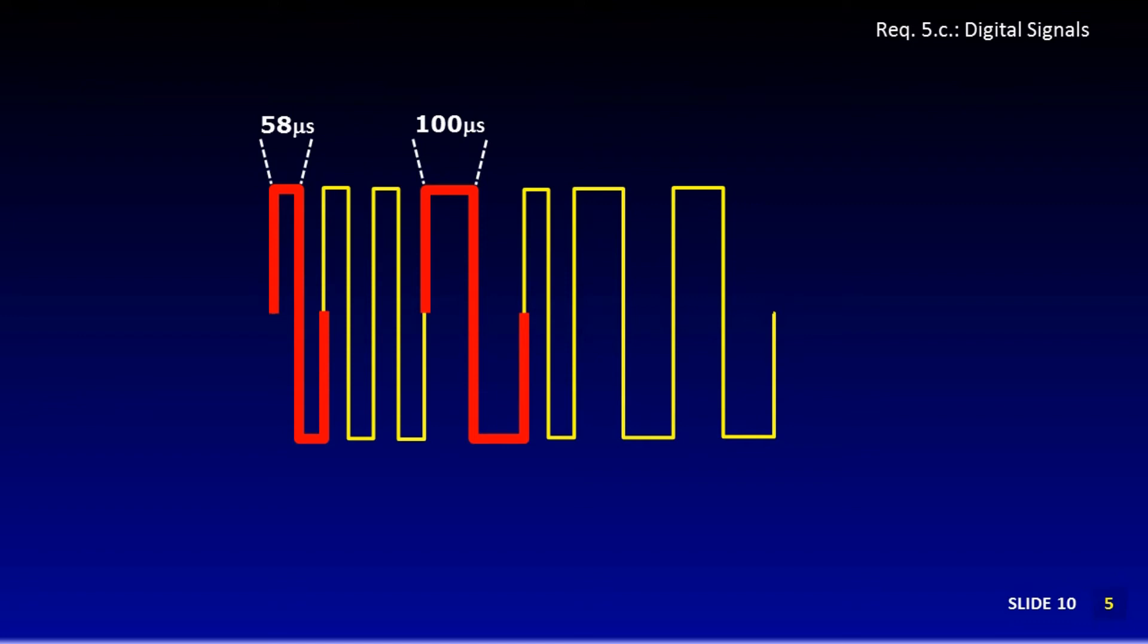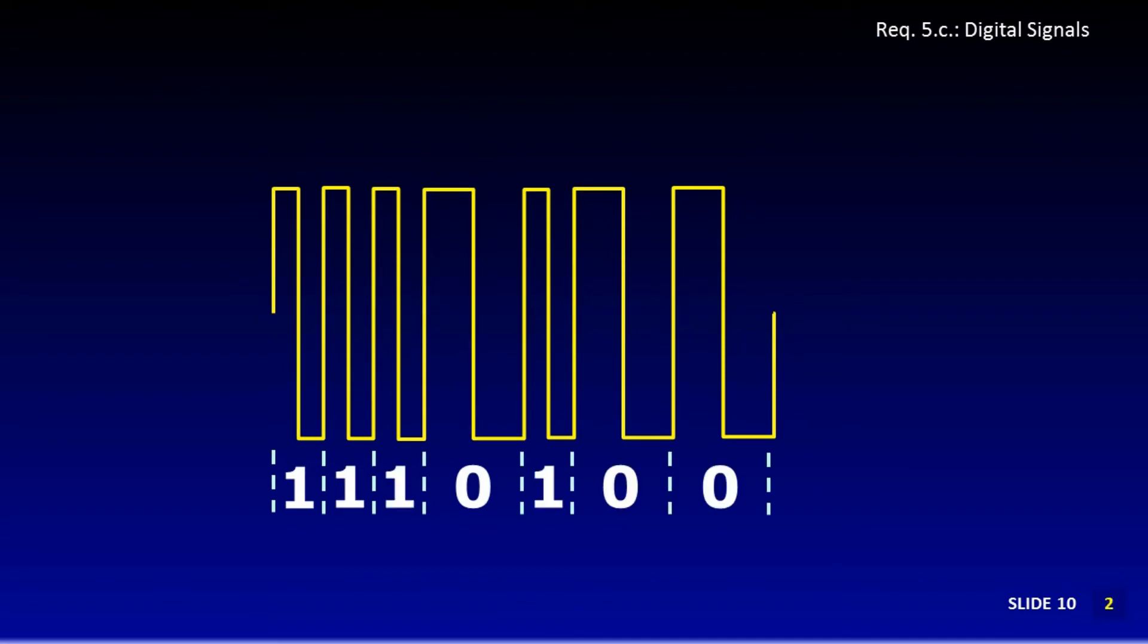The computer and its software it's connected to knows how to detect and separate these bursts. The first short burst is associated with the number one. The second longer burst associated with the number zero. The whole string of bursts then reads one one one zero one zero zero. This is a base two number for one one six, and it could be a code for some command or other information for the software.